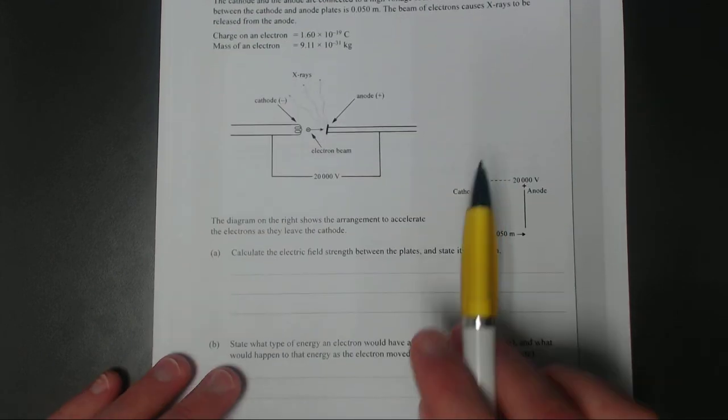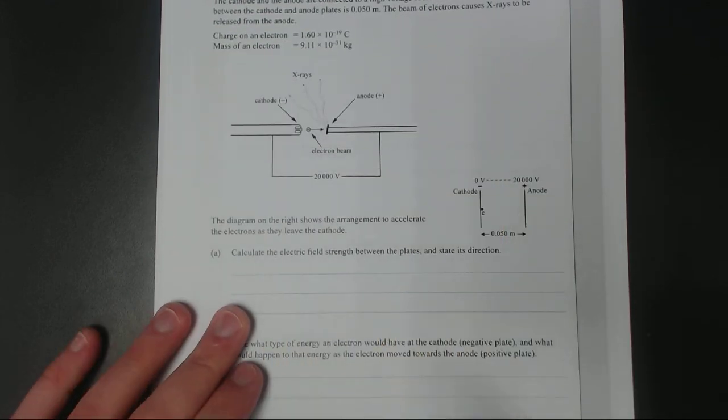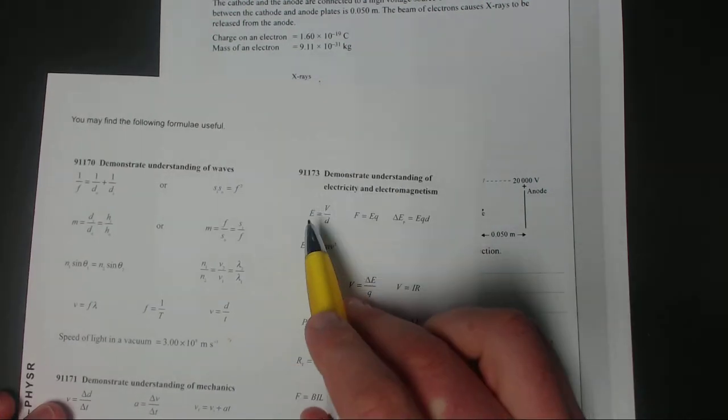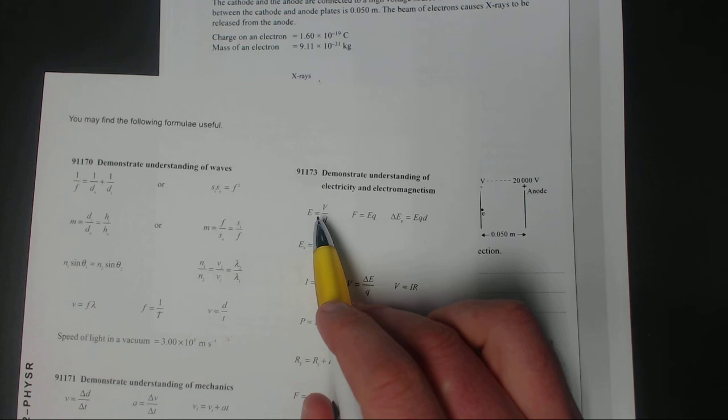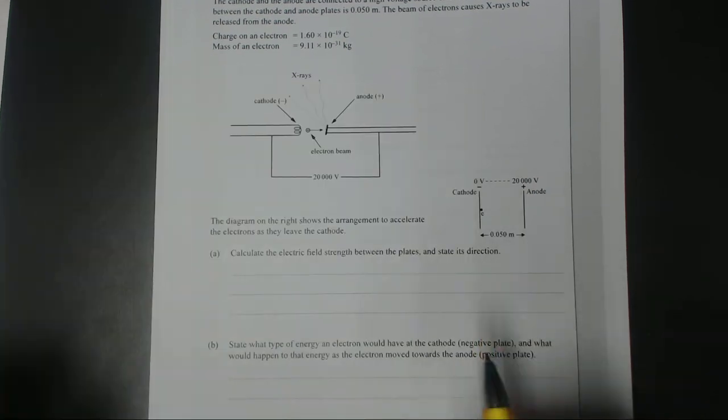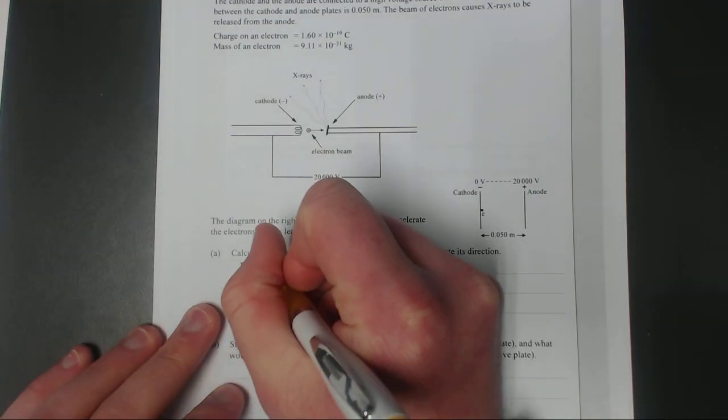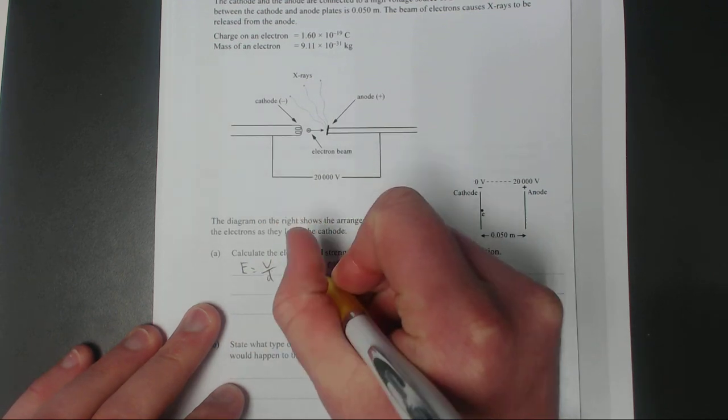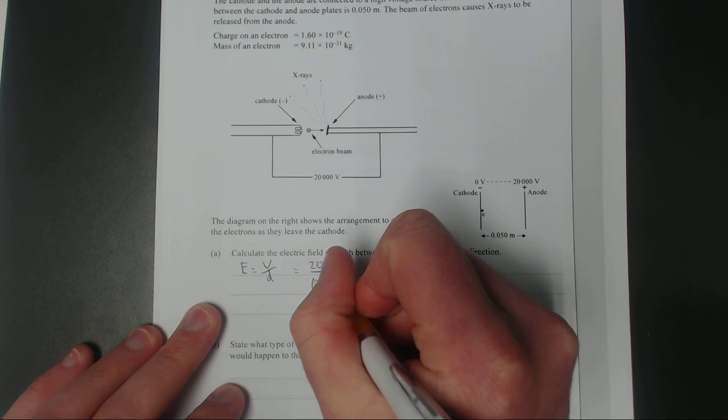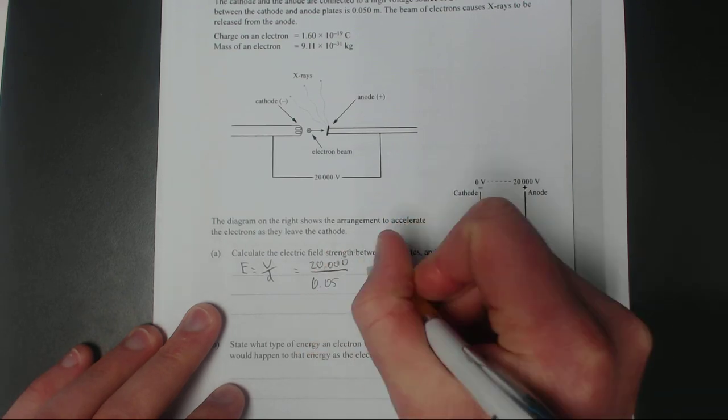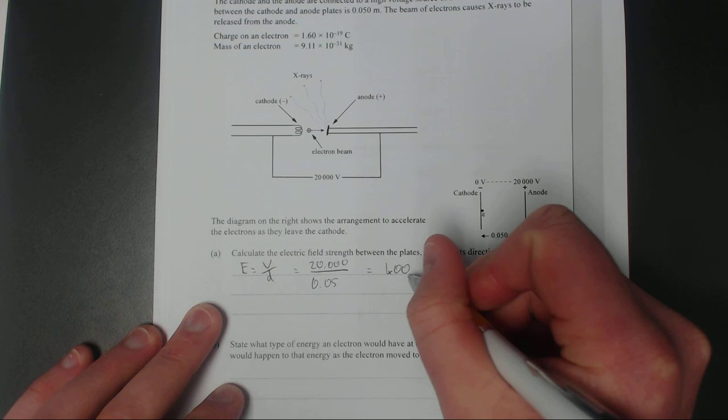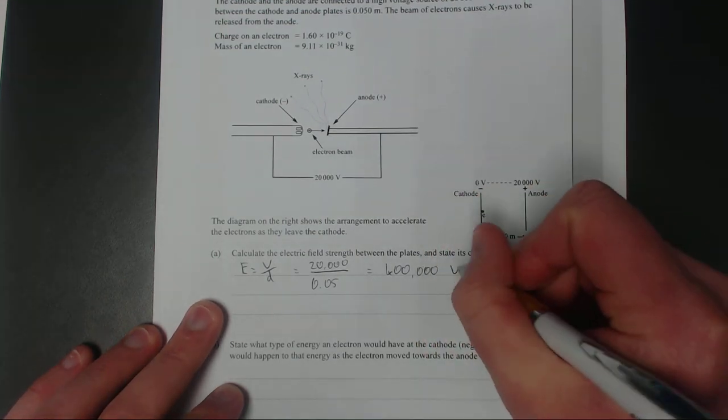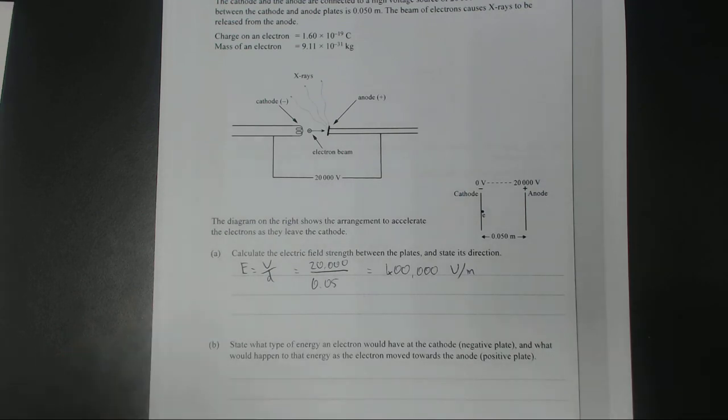Question 1A: Calculate the field strength between the plates and state its direction. If we have a look at our formula sheet, electric field is equal to the voltage divided by the distance. So E equals V over D, which is equal to 20,000 divided by 0.05, that's equal to 400,000. 400,000 volts per meter.